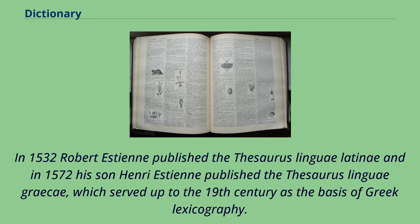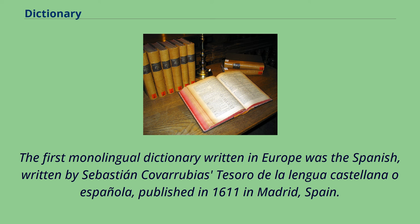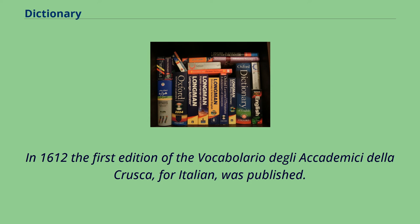The first monolingual dictionary written in Europe was in Spanish, written by Sebastián de Covarrubias — Tesoro de la Lengua Castellana o Española — published in 1611 in Madrid, Spain. In 1612, the first edition of the Vocabolario degli Accademici della Crusca, for Italian, was published.